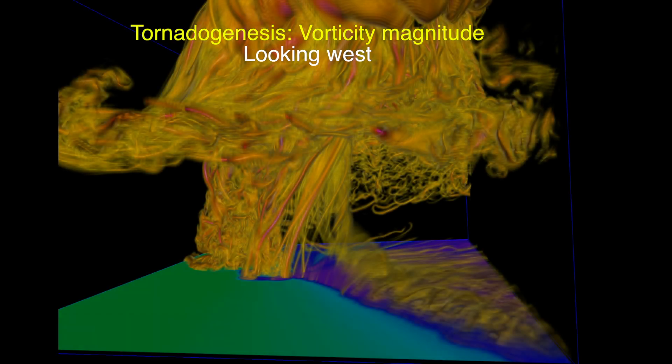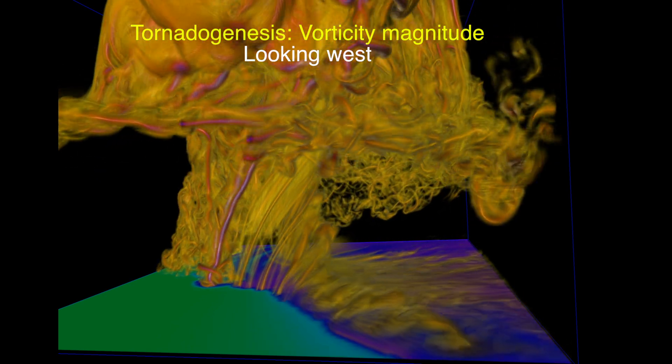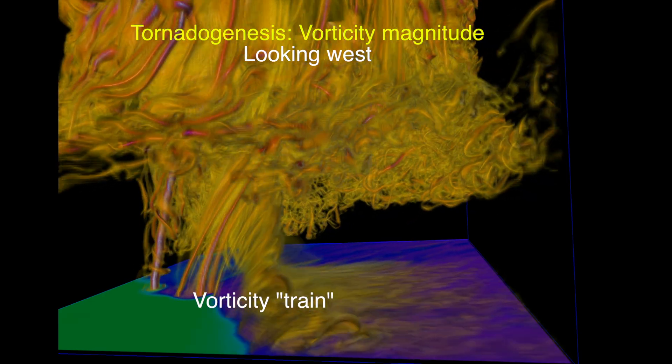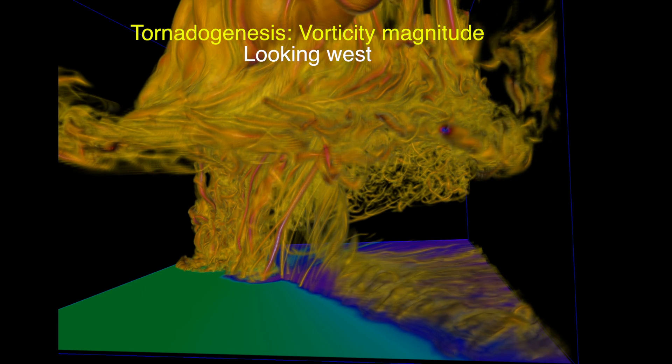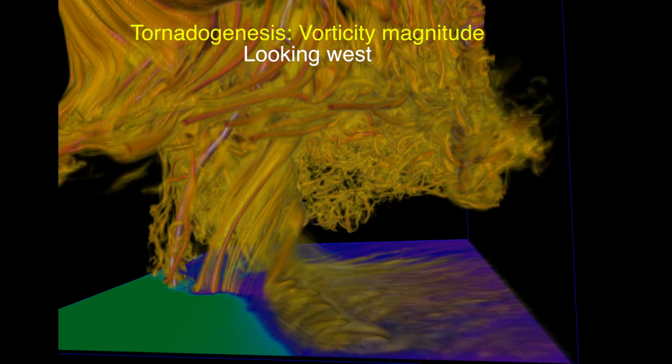Roughly speaking, vorticity is a measure of the air's rotation. Here, we represent vorticity as a volume-rendered field. Along the storm's forward flank boundary, rain-cooled air is consolidated into a region of horizontal vorticity. This train of vorticity is tilted and ingested into the storm's powerful updraft where it contributes towards the updraft's rotation during tornado genesis.